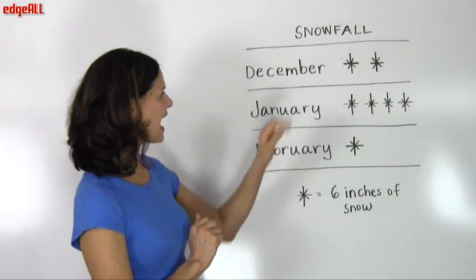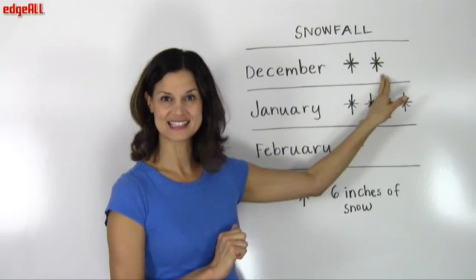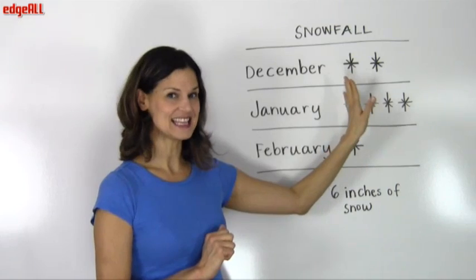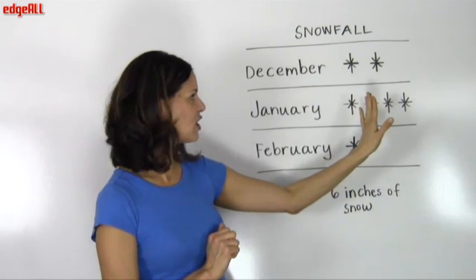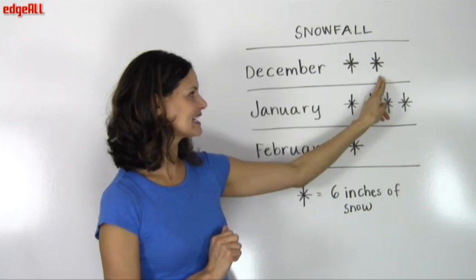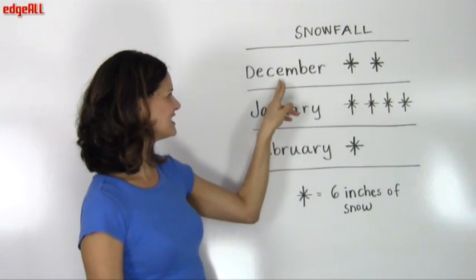As you can see, in December, we have two snowflakes. And since we know that each snowflake is equal to six inches of snowfall, we would know that we have six plus six, or twelve inches of snowfall, for December.